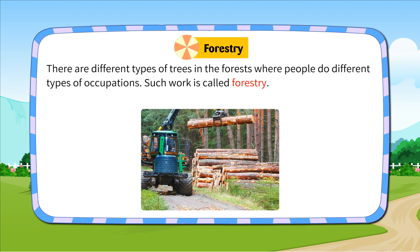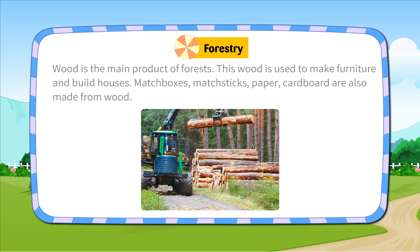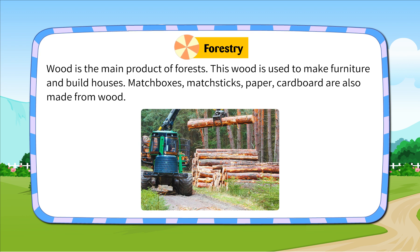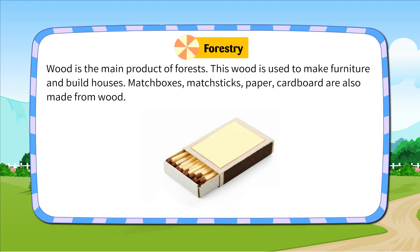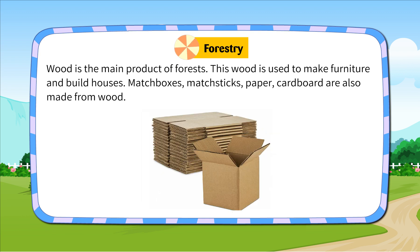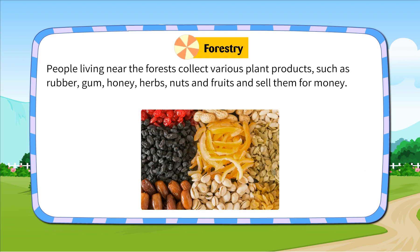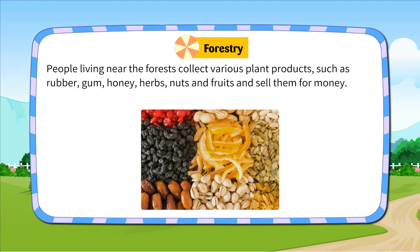There are different types of trees in the forest where people do different types of occupations. Such work is called forestry. Wood is the main product of the forest. This wood is used to make furniture and build houses. Matchboxes, matchsticks, paper and cardboard are also made from wood. People living near the forest collect various plant products such as rubber, gum, honey, herbs, nuts and fruits and sell them for money.